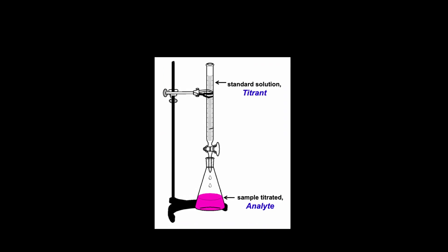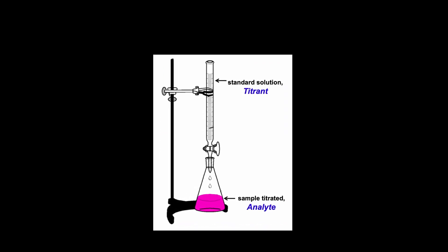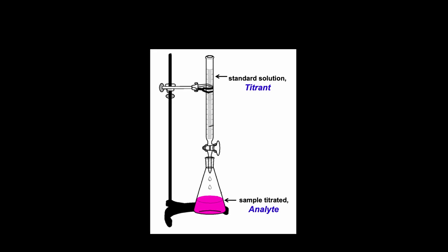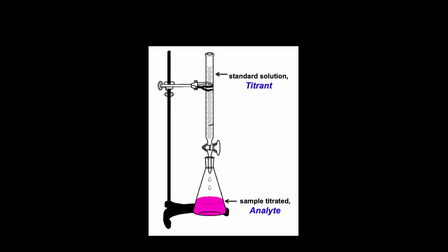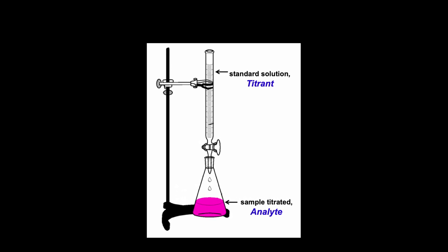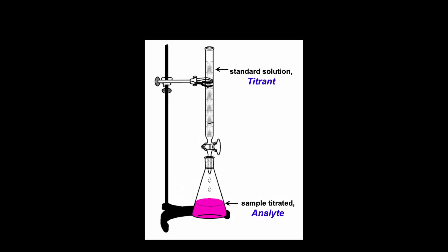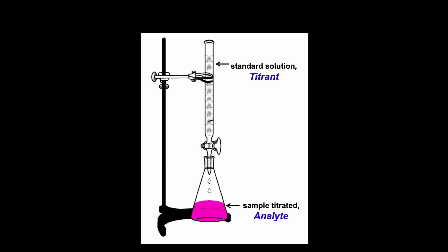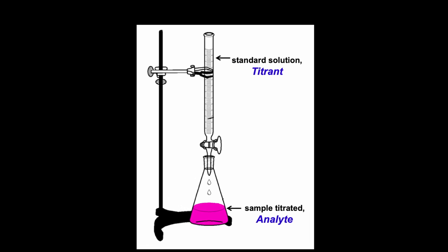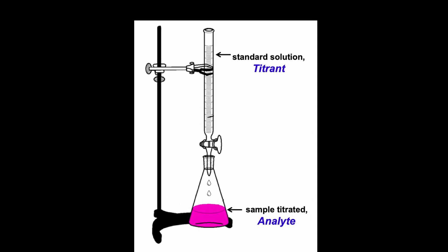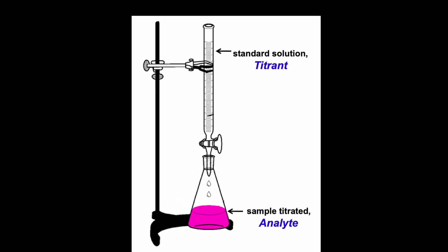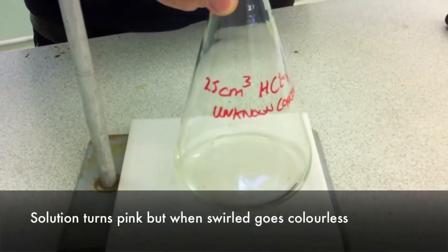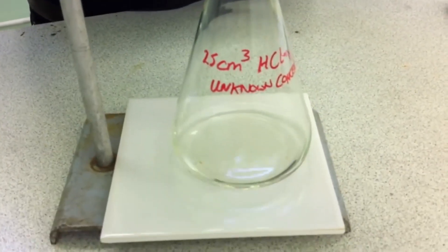Now that you know about the pieces in a titration, it's really important to go over indicators. Indicators tell you when the solution of unknown concentration is perfectly neutralized. The endpoint tracks this, as the endpoint is the instance where the indicator's color stops fading. You can see in this example when the endpoint is reached.